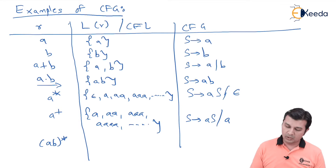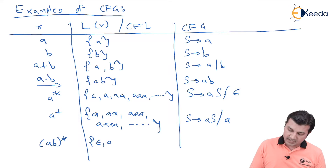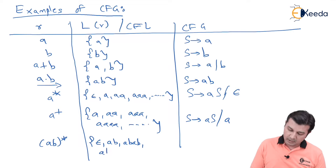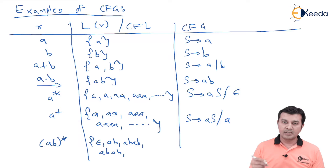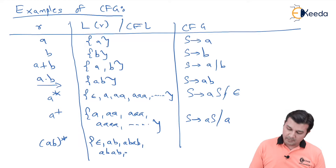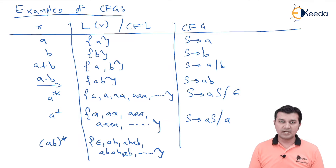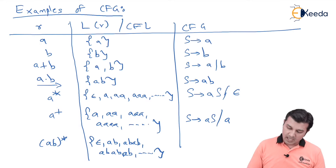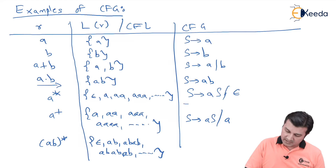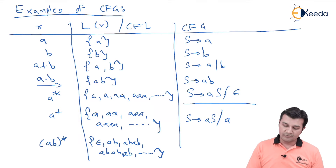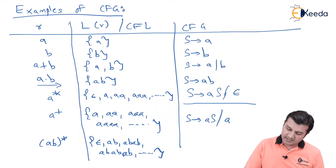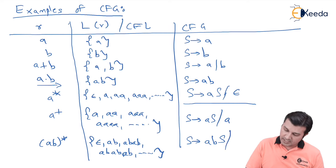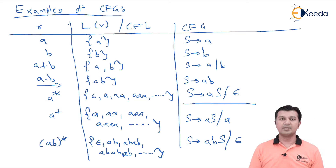Next, for '(ab)*' — zero or more repetitions of 'ab' — the language is {ε, ab, abab, ababab, ...}. This follows the same pattern as 'a*', but replacing 'a' with the string 'ab'. So the CFG is: S → abS | ε.